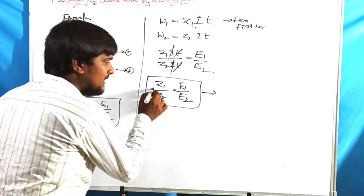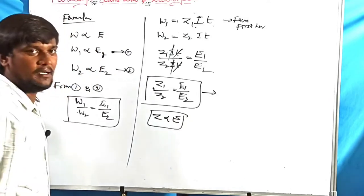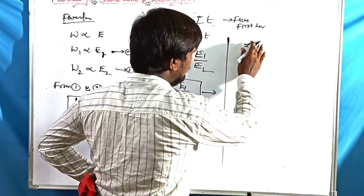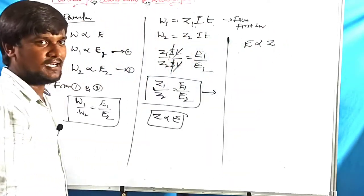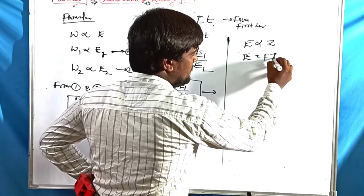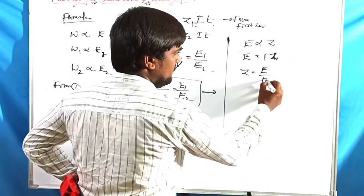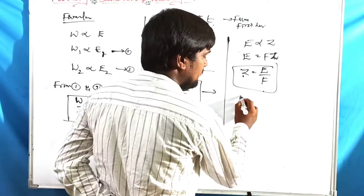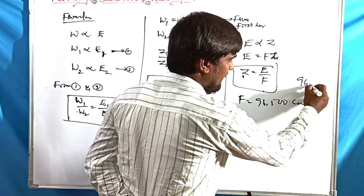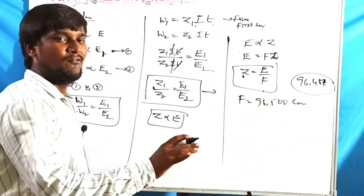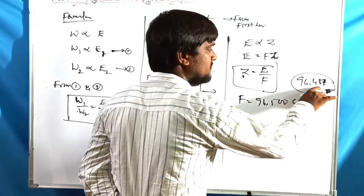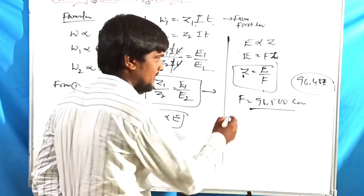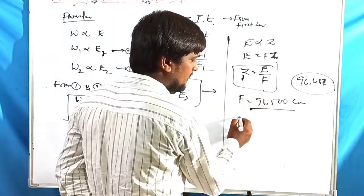From W ∝ E, similarly Z ∝ E. This proportionality gives E = F × Z (where F is Faraday's constant), so Z = E / F. The Faraday value is 96,500 coulombs (exact value approximately 96,487 C, but 96,500 is used in numerical problems). Therefore Z = equivalent weight / Faraday.